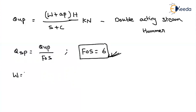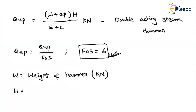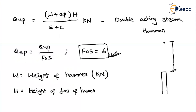Coming to the parameters: W is the weight of the hammer used to drive the pile, always considered in kilonewtons. Units are very important. H is the height of fall of the hammer — that is, the distance from the drop point down to the pile top — and this is measured in centimeters. Always substitute W in kilonewtons and H in centimeters.